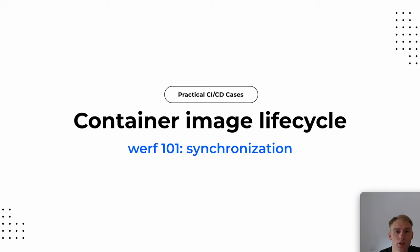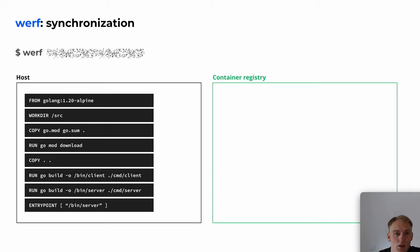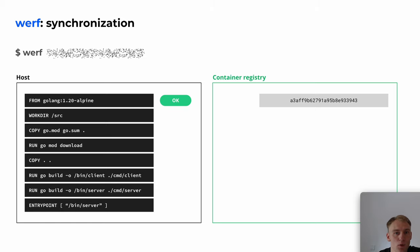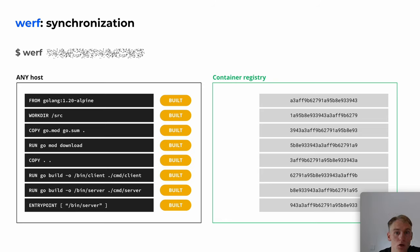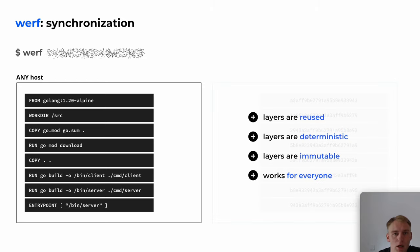Now we have enough context to see how the same is done with Werf. Werf builds, tags, and pushes an image for each layer into the container registry. Then we run the same build on an arbitrary host. As a result, nothing happens — because all the layers have already been built and stored in the container registry. We don't push anything from the host and don't pull from the registry. To sum up: layers are reused between all builds and are immutable, because Werf coordinates the work of all builders.